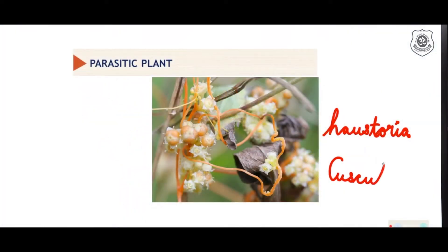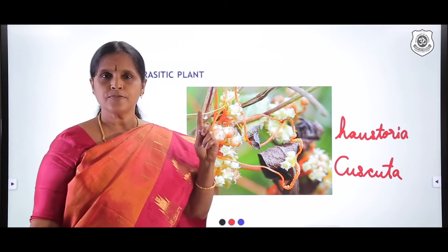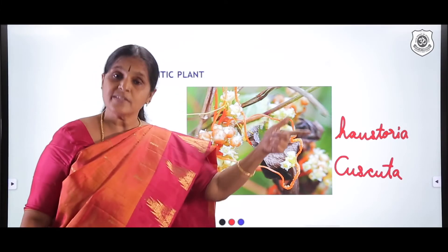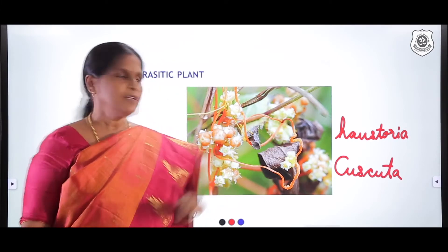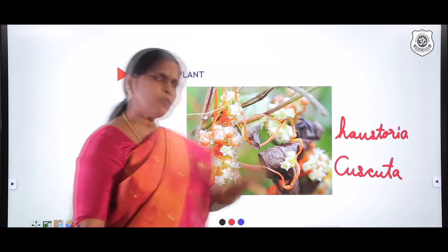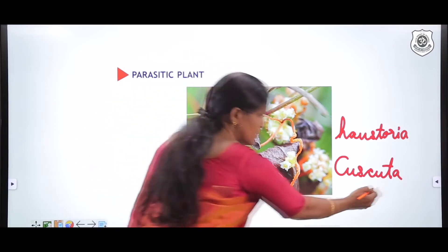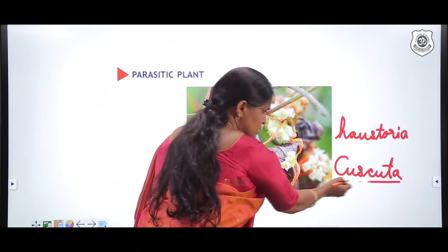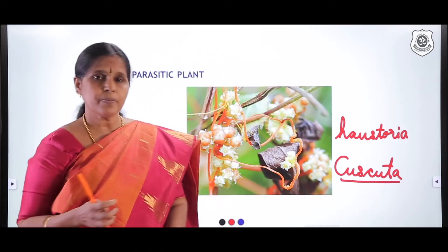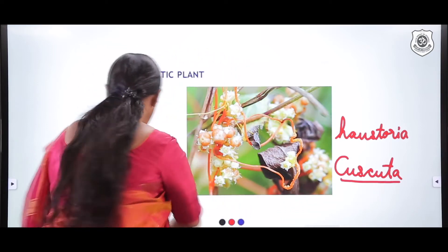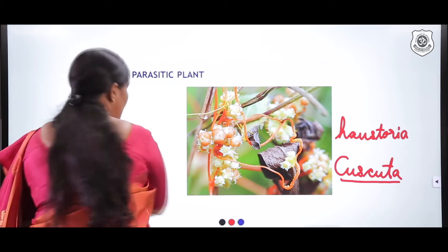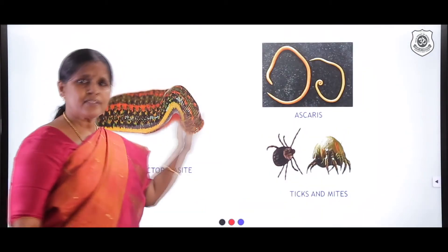This parasitic plant is called Cuscuta, also known as Amarbel. This example is very important from the examination viewpoint. For the board exam they have asked 'name a parasitic plant,' so remember: Cuscuta or Amarbel. You need only this one example, though there are many others — no need to complicate yourself.